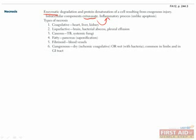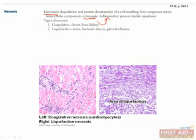Since necrosis is so chaotic, there are different ways it can happen in the body depending on the location. As we go through the six types, we'll highlight some of the important microscopic and macroscopic features of each one. Coagulative necrosis occurs in the heart, liver, and kidneys—all solid organs with strong connective tissue. The underlying connective tissue holds everything in place, allowing the necrotic material to form a discrete clot-like mass. Liquefactive necrosis, on the other hand, happens in places without strong connective tissue—the brain, bacterial abscesses, and pleural effusion—and these all end up looking like pus.